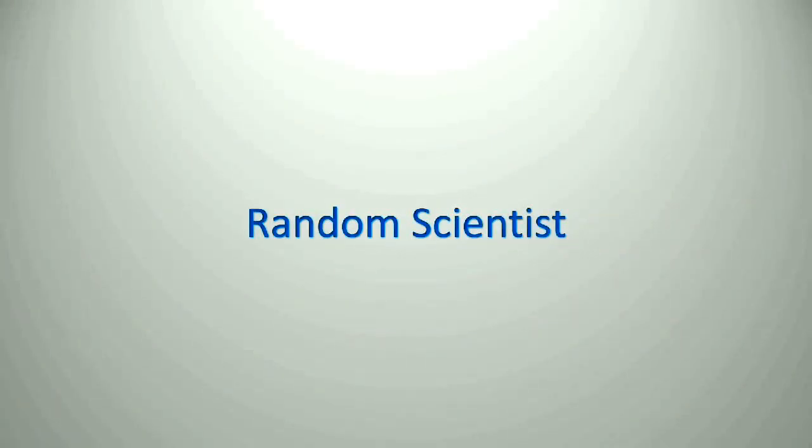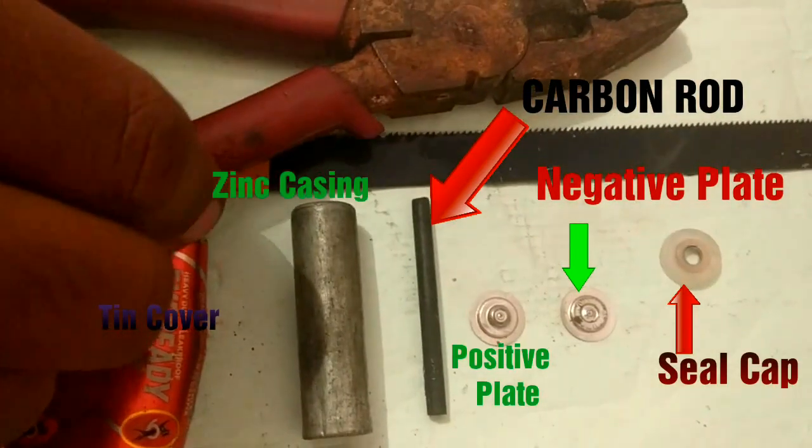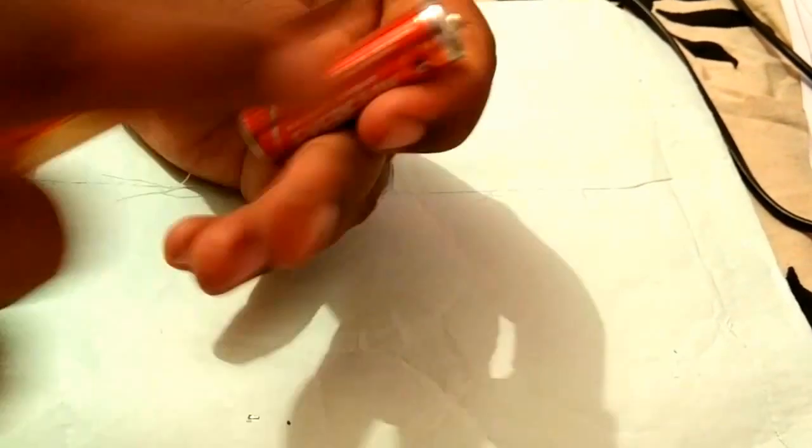Welcome to this episode of Random Scientist. Today we are going to cut open a double A battery. Here's a quick overview of what it consists of and the tools used. I am playing this video at a faster speed actually.